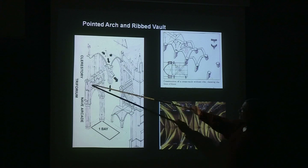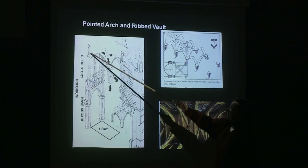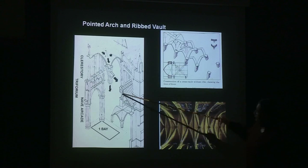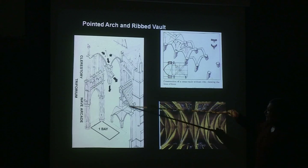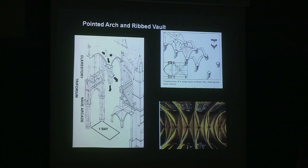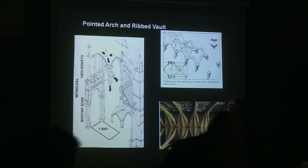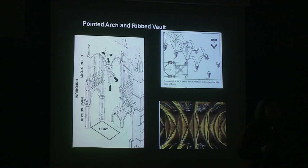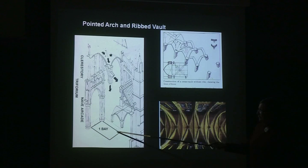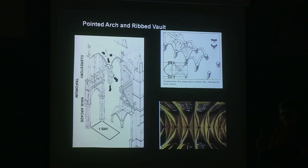The basic configuration was the nave arcade, the triforium, and then the clerestory. The triforium part initially came into being to mask the leaning roofs of the aisles, but then it became a gallery in some examples. The variations that we saw yesterday showed us the truncating, the shortening, or the lengthening vertically of these various components, which in turn affected the way the ribbed vaults were configured.